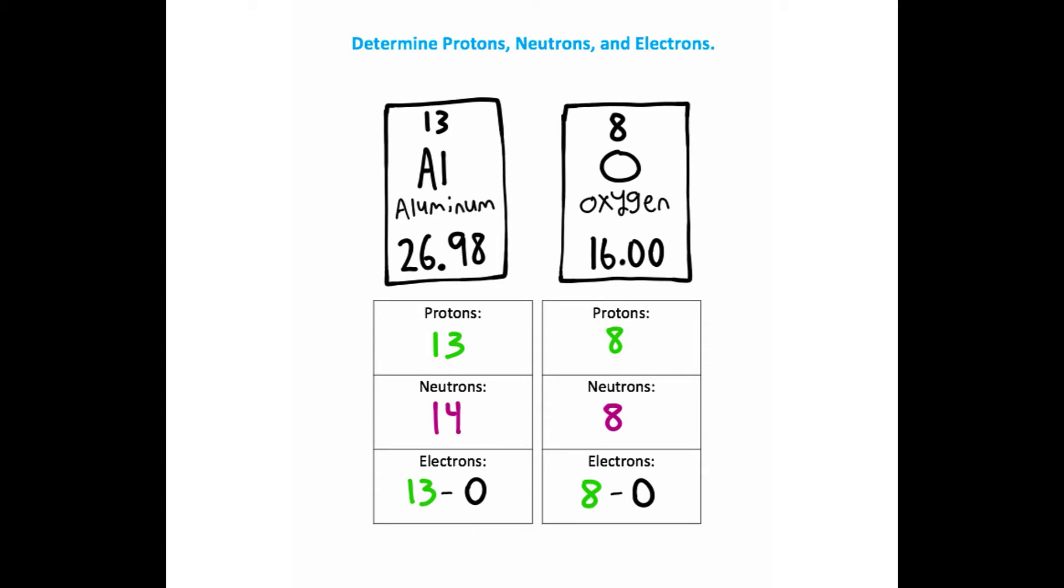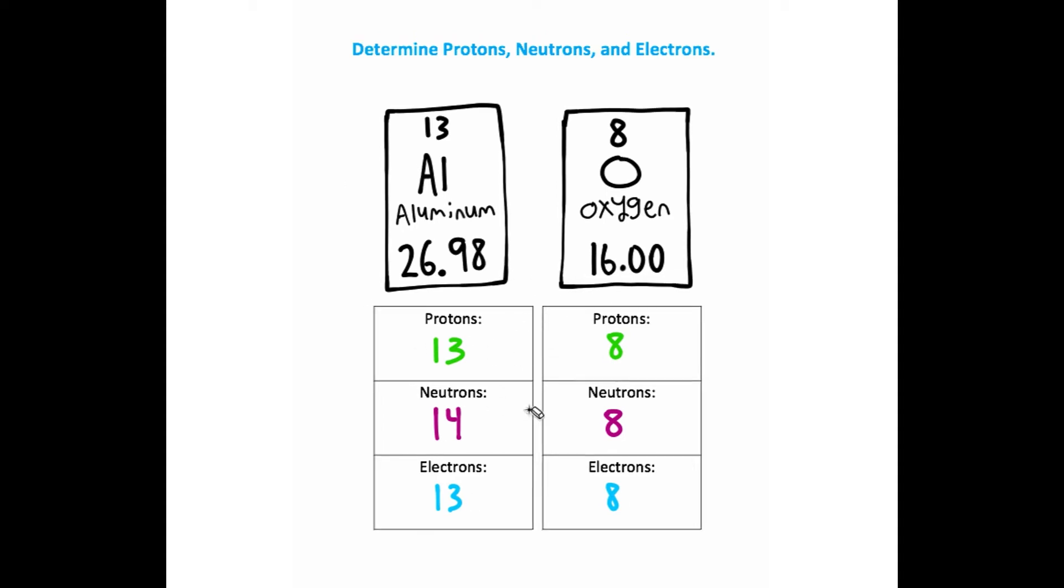So if we do the math here, we're going to get 13 electrons for aluminum and 8 electrons for oxygen. Notice that the protons and electrons match here. This will always be the case when we're dealing with neutral atoms like this on a periodic table, but this won't always be the case when we're dealing with ions.